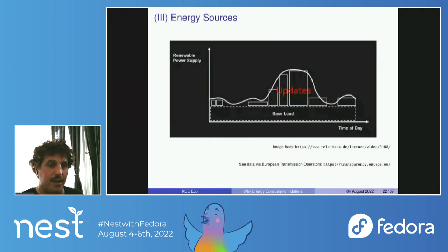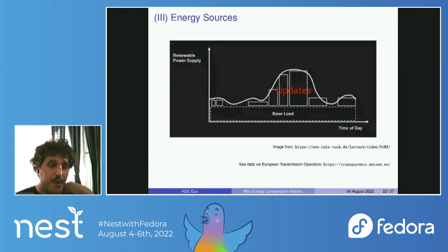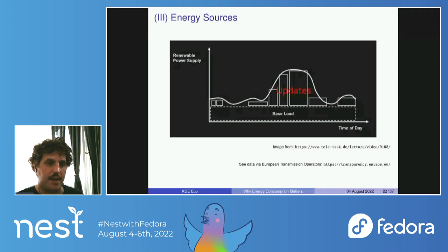Regarding renewable energy sources: if we can shift shiftable tasks — like updates — to times of day when more renewable energy is available, we contribute less to greenhouse gas emissions from technology. Together with the Green Web Foundation and KDE Eco, we're looking at how to get information from the grid. The Green Web Foundation is packaging something that checks the power supply mix at a given time and recommends doing updates or other shiftable tasks at those times. We want to write a proposal to get funding to develop this for free software distributions — please be in touch.